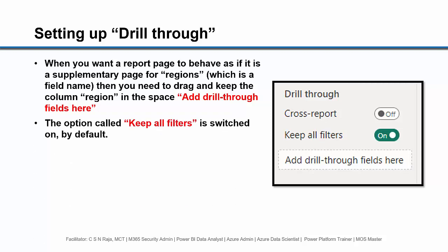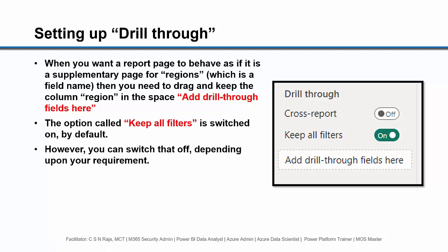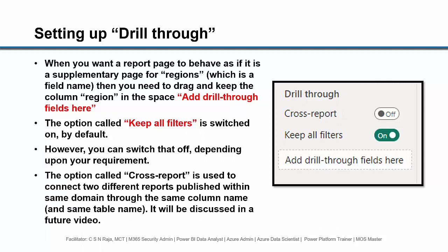The option called keep all filters is switched on by default. However, you can switch that off depending upon your requirement. The option called cross report is used to connect two different reports published within the same domain through the same column name and same table name. It will be discussed in a future video and we are not going to talk about it in this video.